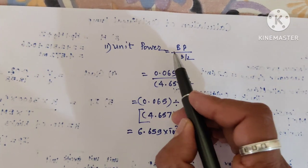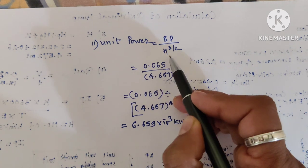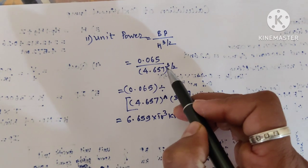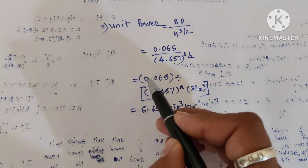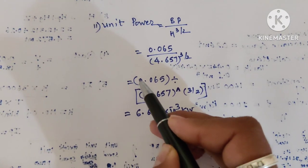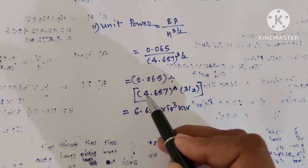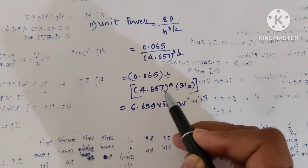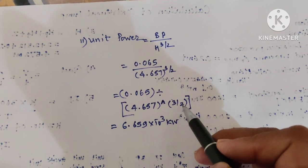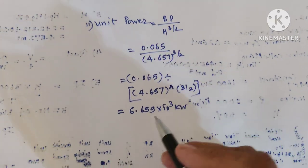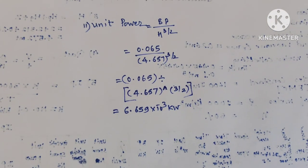The last one, unit power: BP / H^(3/2). My BP was 0.065 divided by 4.657^(3/2). Substitution in calculator: 0.065 / (4.657)^(3/2). My answer is 6.659 × 10^-3 kilowatt.